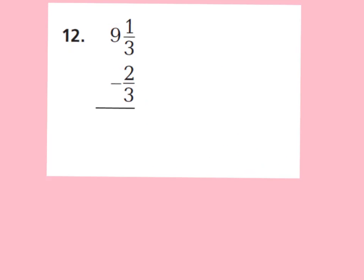If you feel like an expert, go ahead and pause the video and try this on your own. If you feel like a novice or an apprentice, continue listening. You should have said: 9 wholes and 1 third minus 2 thirds. I cannot take away 2 thirds from 1 third, so I have to make it work. I'm going to borrow a whole from my 9 and call it 8. Since I took away a whole, I have to add a whole to my 1 third — so I'm going to add 3 thirds. 1 third plus 3 thirds is now 4 thirds. So 4 thirds minus 2 thirds is 2 thirds, and I have 8 wholes. Your answer should be 8 and 2 thirds. I know it's already simplified because 2 and 3 are consecutive numbers.